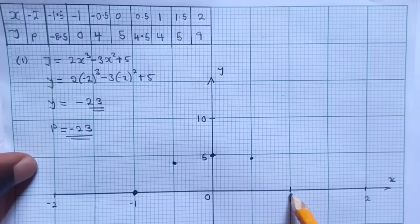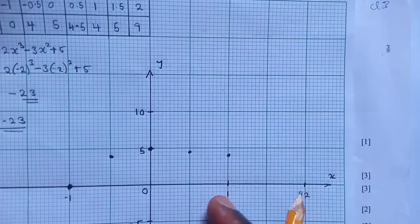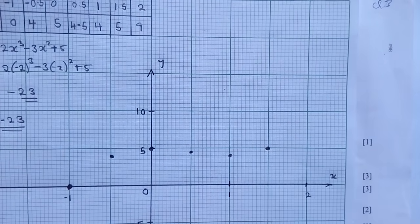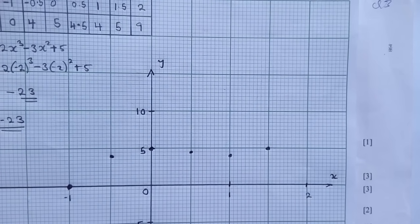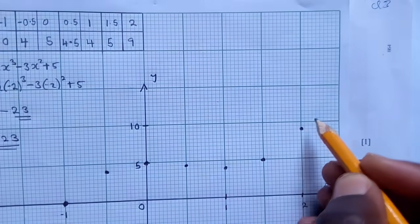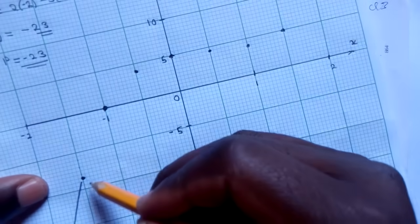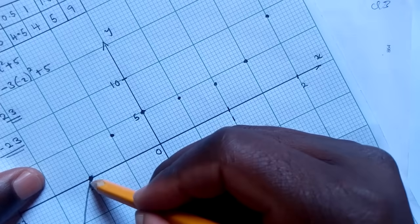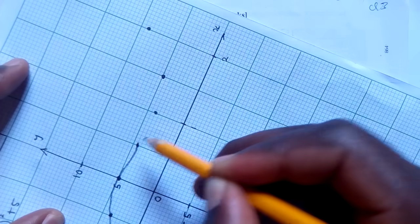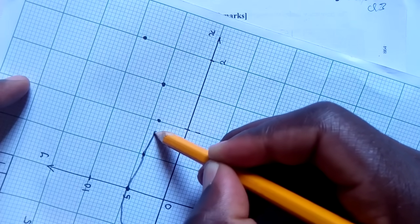Then we go to (1, 4): this is 1, and 4 is somewhere here. Then (1.5, 5): 1.5 is between 1 and 2, and 5 is here. And then (2, 9): 2 is over here, 10 is here, so 9 is just below — it's here. So we can see all our coordinates, and then we draw our graph.